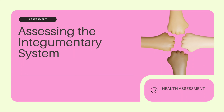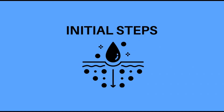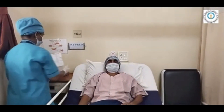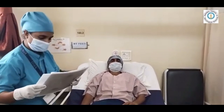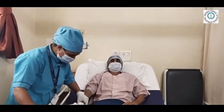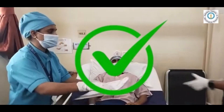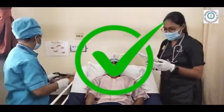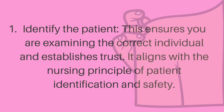Assessing the Integumentary System. Initial Assessment. Step 1: Identify the patient. This ensures you are examining the correct individual and establishes trust. It aligns with the nursing principle of patient identification and safety. By prioritizing patient identification, nurses uphold ethical and professional standards, promote patient safety and trust, and lay the foundation for effective communication and collaboration throughout the examination.